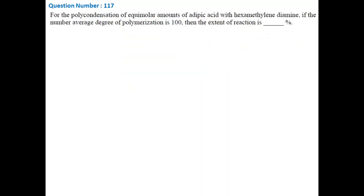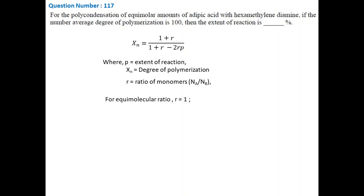Next question is: for the polycondensation of equimolar amount of adipic acid and hexamethylenediamine, what will be the extent of reaction if the number average degree of polymerization is 100? For a two-monomers system, the degree of polymerization can be represented by this equation, where R is the ratio of different monomers and P is extent of reaction. For equimolar system, R will be 1, so the equation will reduce to a very simple form.